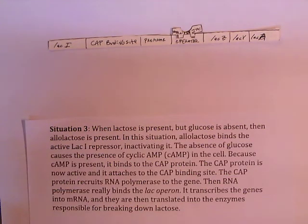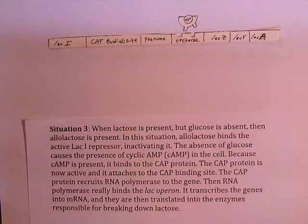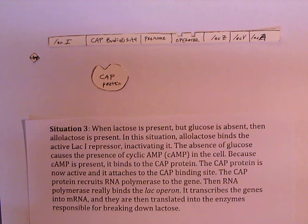Situation 3: When lactose is present but glucose is absent, then allolactose is present. In this situation, allolactose again binds the active lacI repressor, inactivating it. The absence of glucose causes the presence of cyclic AMP, or adenosine monophosphate, in the cell.